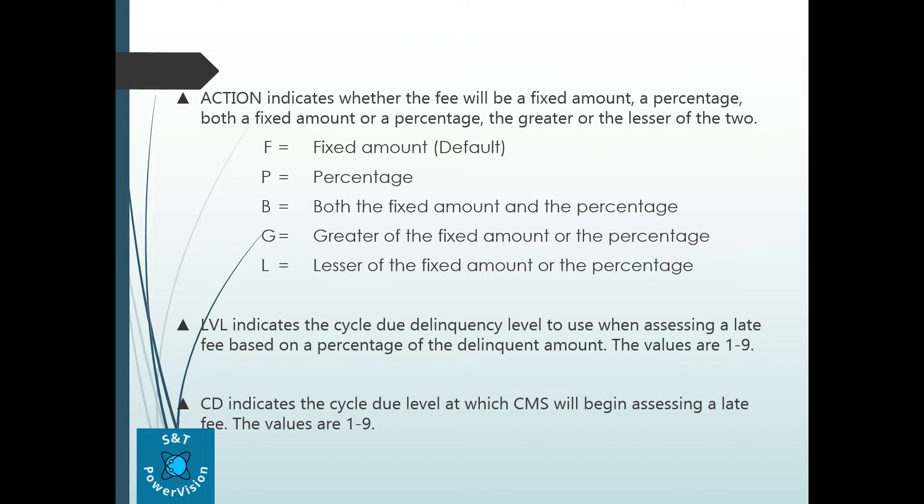The L field indicates the cycle due delinquency level to use when assessing a late fee based on a percentage of the delinquent account. Values are 1 to 9. The CD Level field indicates the CD level at which the late fee will be calculated and posted — it shows the cycle due level at which CMS will begin assessing a late fee. Values are 1 to 9.